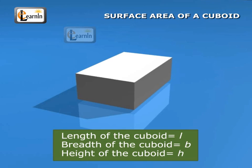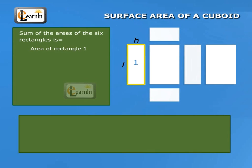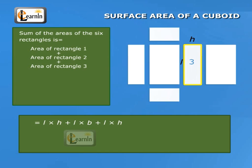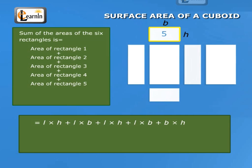If we take the length of the cuboid as L, breadth as B, and the height as H, then the sum of the areas of the six rectangles is area of rectangle one, L into H, plus area of rectangle two, L into B, plus area of rectangle three, L into H, plus area of rectangle four, L into B, plus area of rectangle five, B into H, plus area of rectangle six, B into H.